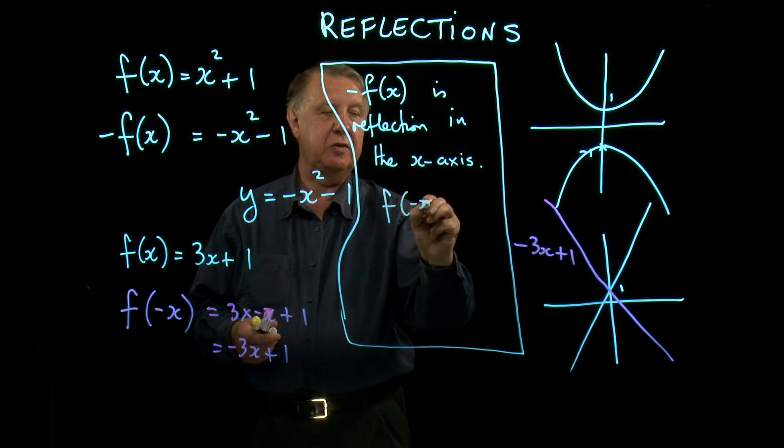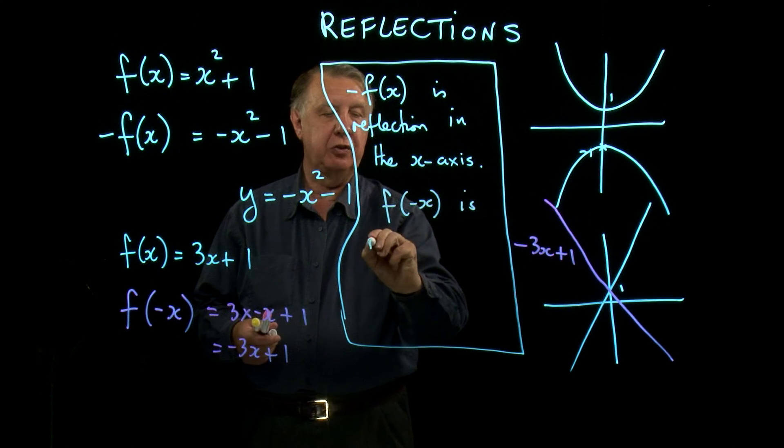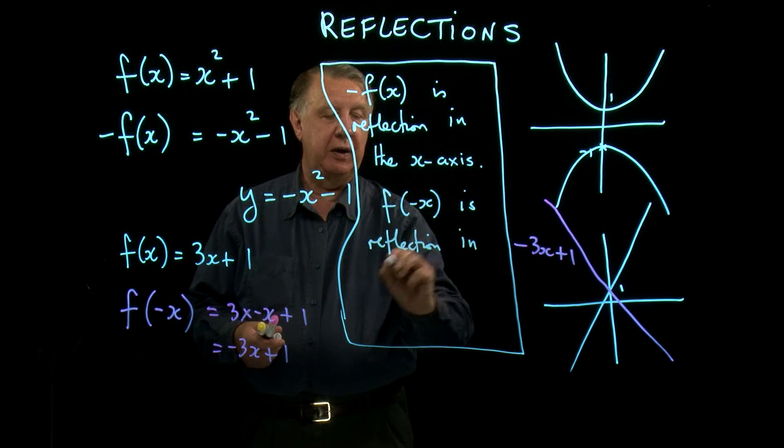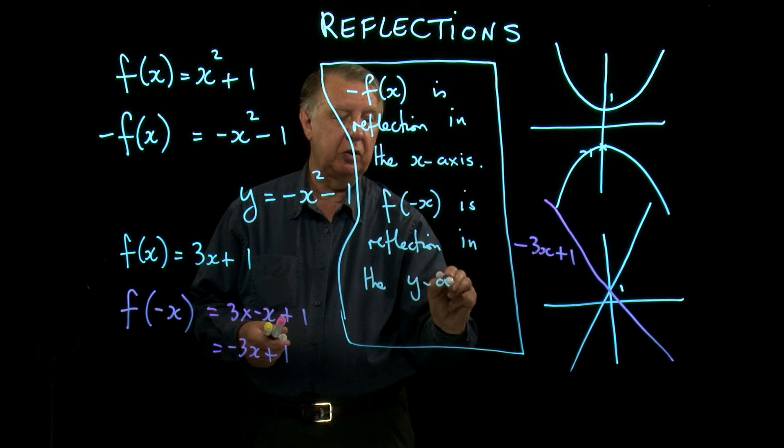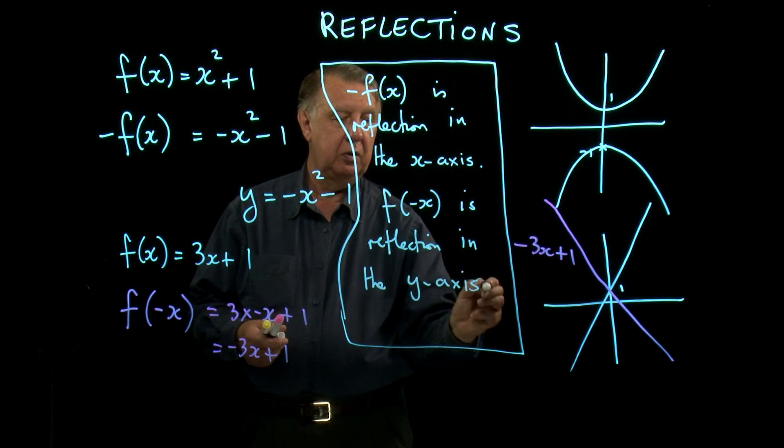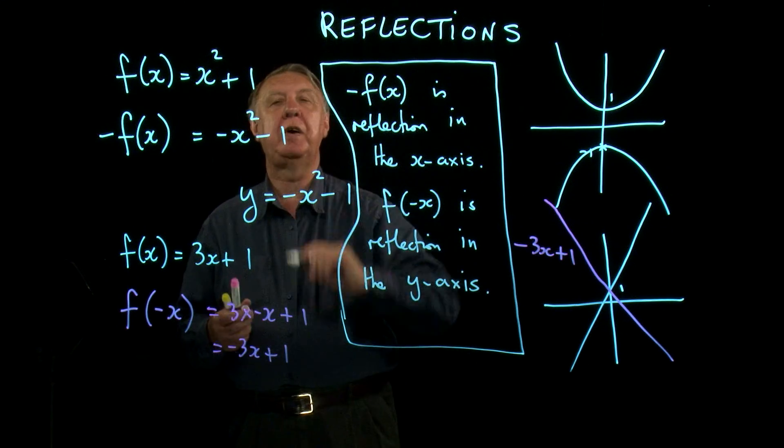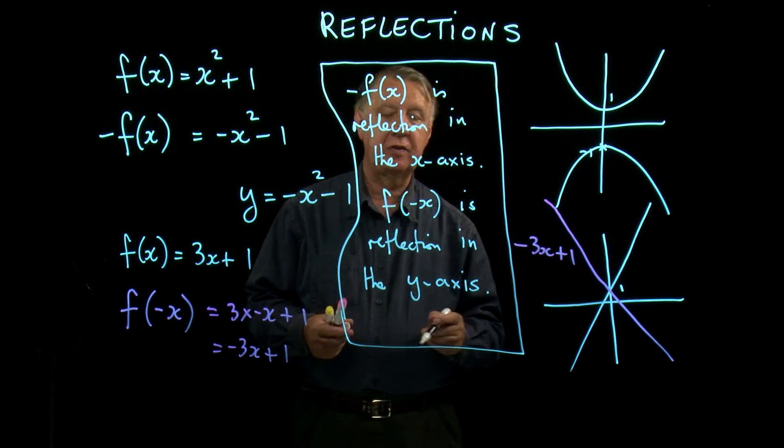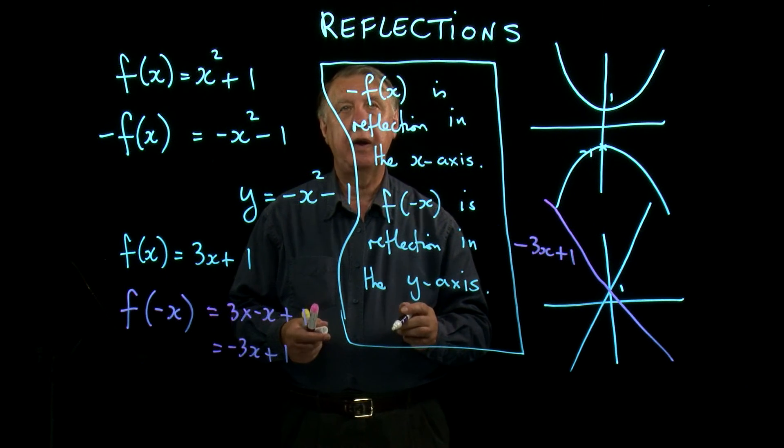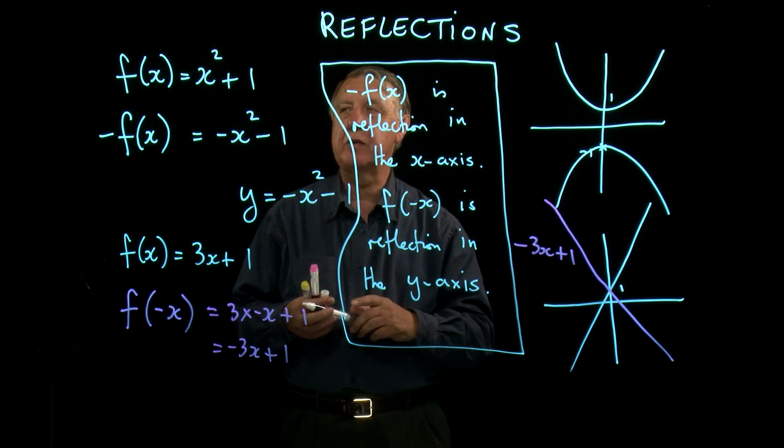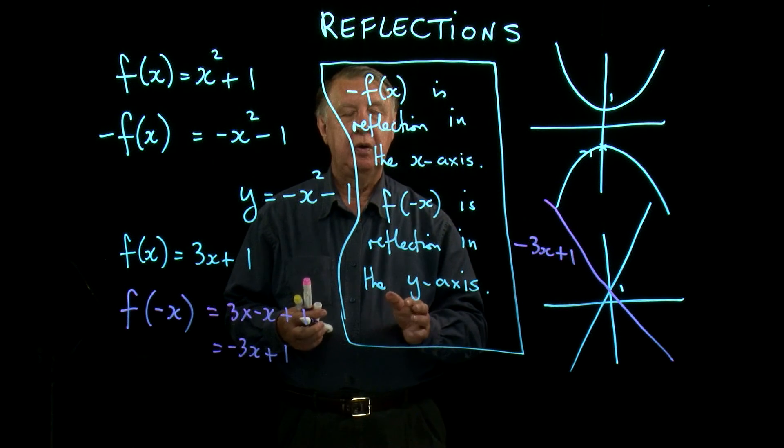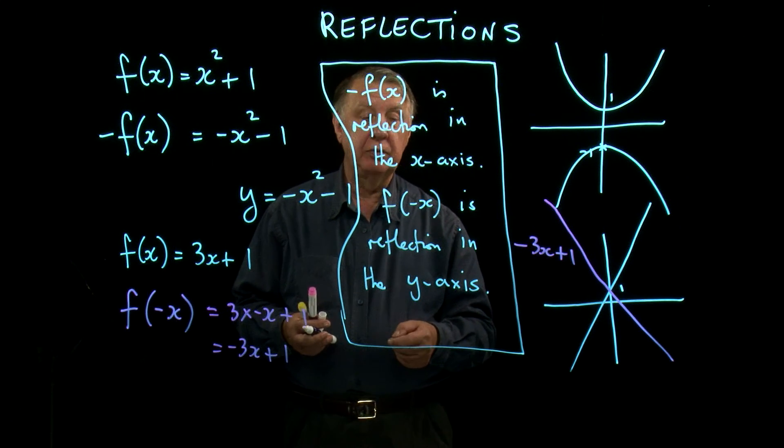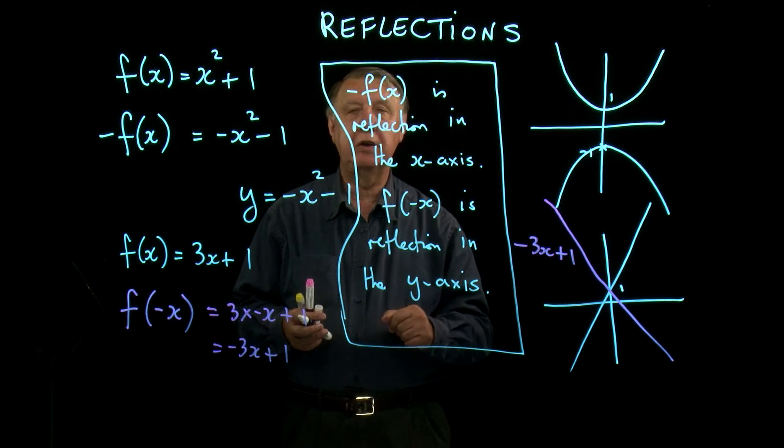So function negative x is reflection in the y-axis. I think this one is possibly forgotten more than some of them. So negative function x is reflection in the x-axis. Function negative x is reflection in the y-axis. So be careful not to confuse those. I think it's quite easy to confuse them because people certainly do. So just try and learn them.